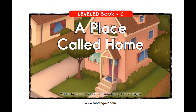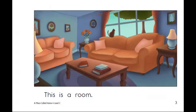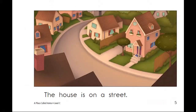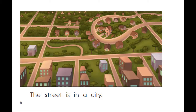A Place Called Home, written by Taryn Anderson and illustrated by Kirsten Egan. This is a room. The room is in a house. The house is on a street. The street is in a city.